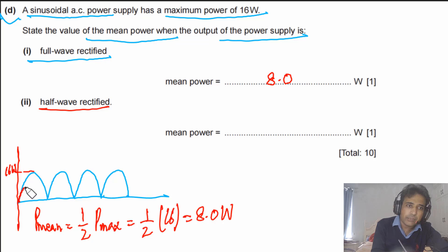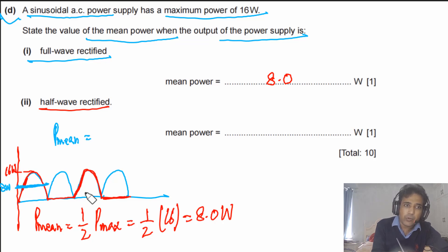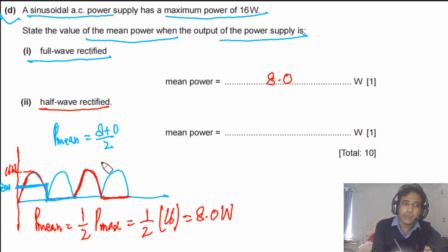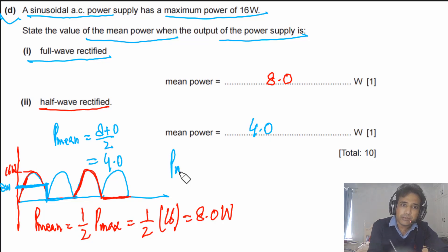For half-wave rectification, half of the cycle has power and half has no power. So the mean power is 8.0 / 2 = 4.0 watts. Alternatively, for half-wave rectification P_mean = ¼ × P_max.